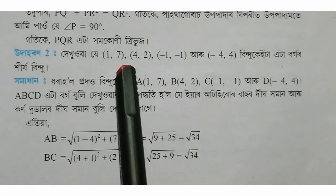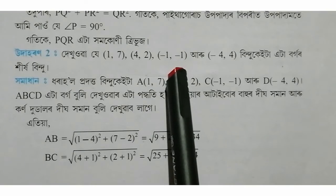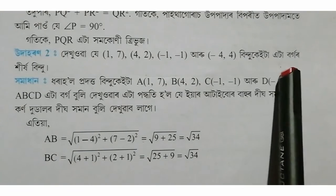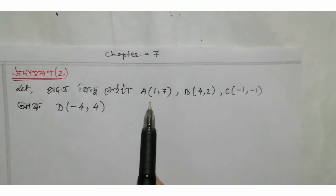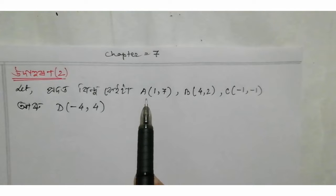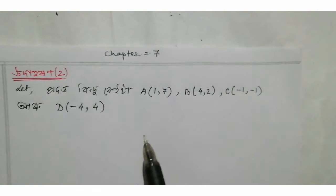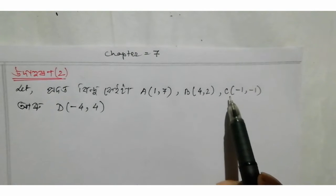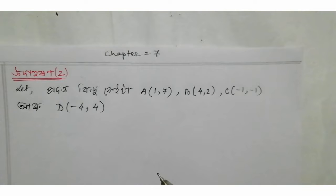Look at the points: 1,7 and 4,2 and 1,2 and 1,4 and 2,2. Students, I have first written part by part — the points are labeled A, B, C, D. A is (1,7), B is (4,2), C is (4,4).